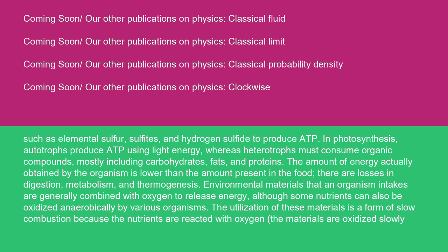In photosynthesis, autotrophs produce ADP using light energy, whereas heterotrophs must consume organic compounds, mostly including carbohydrates, fats, and proteins. The amount of energy actually obtained by the organism is lower than the amount present in the food. There are losses in digestion, metabolism, and thermogenesis. Environmental materials that an organism intakes are generally combined with oxygen to release energy, although some nutrients can also be oxidized anaerobically by various organisms.